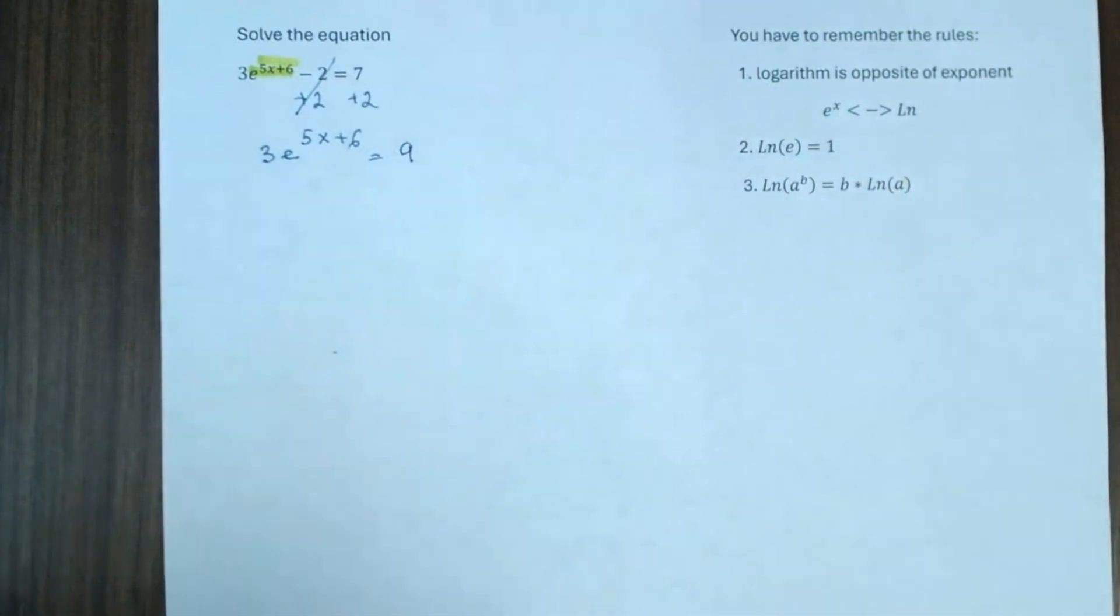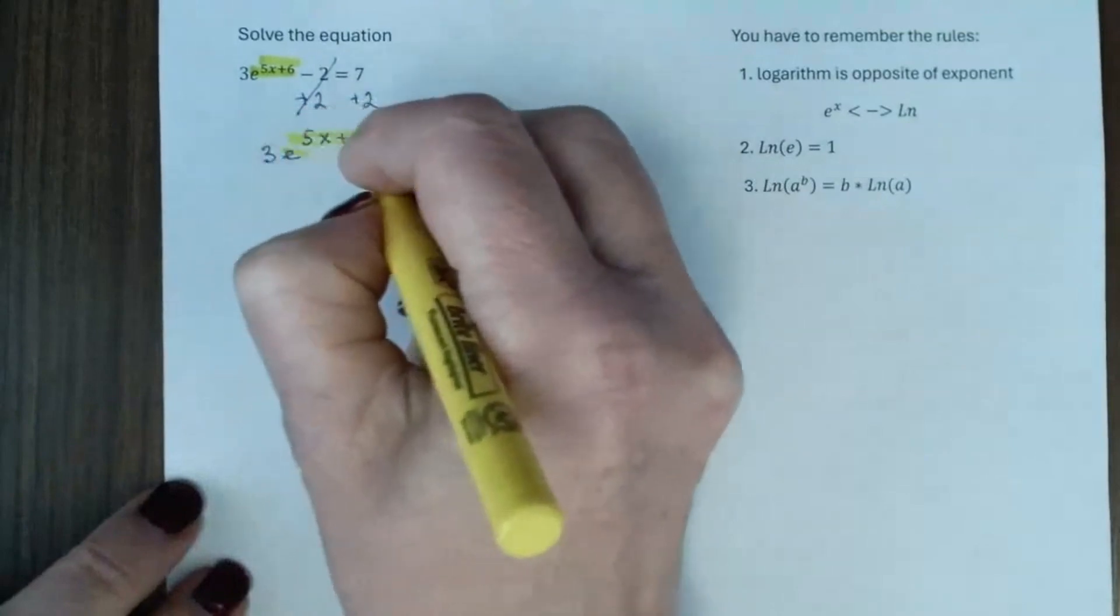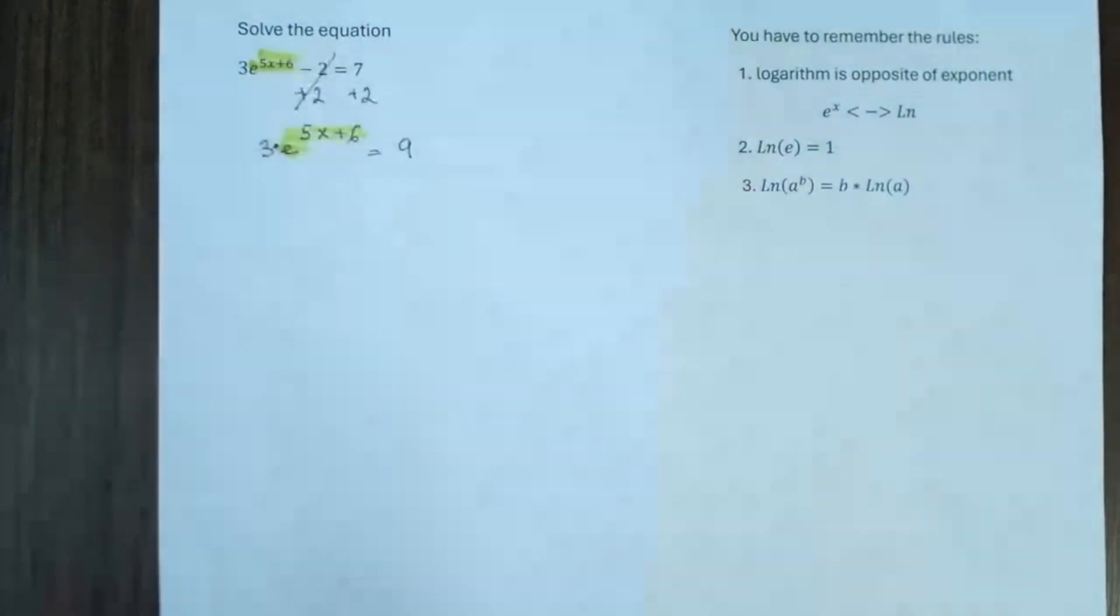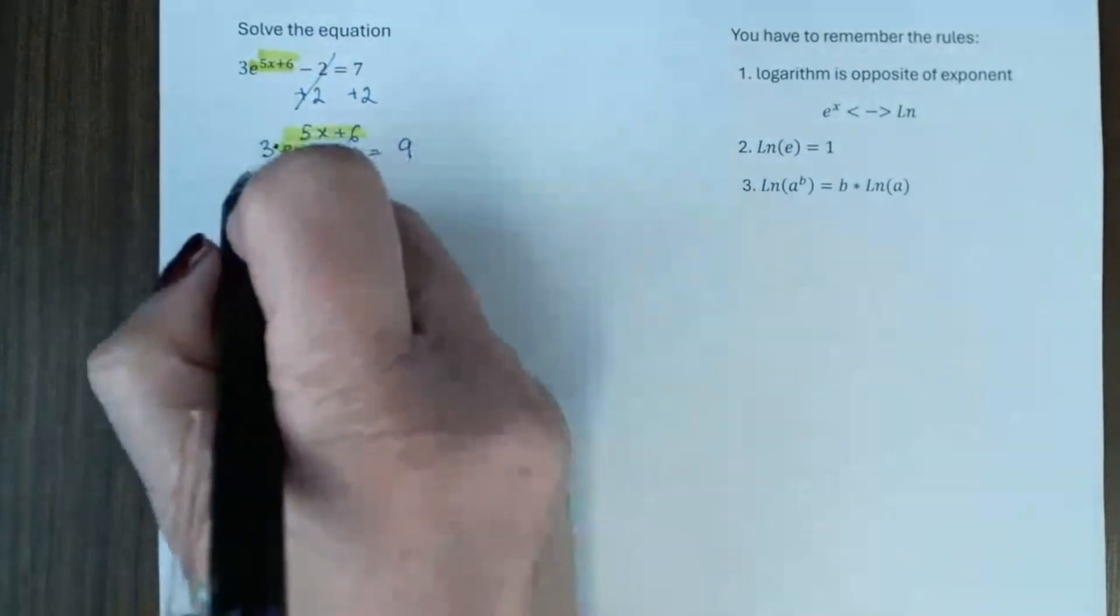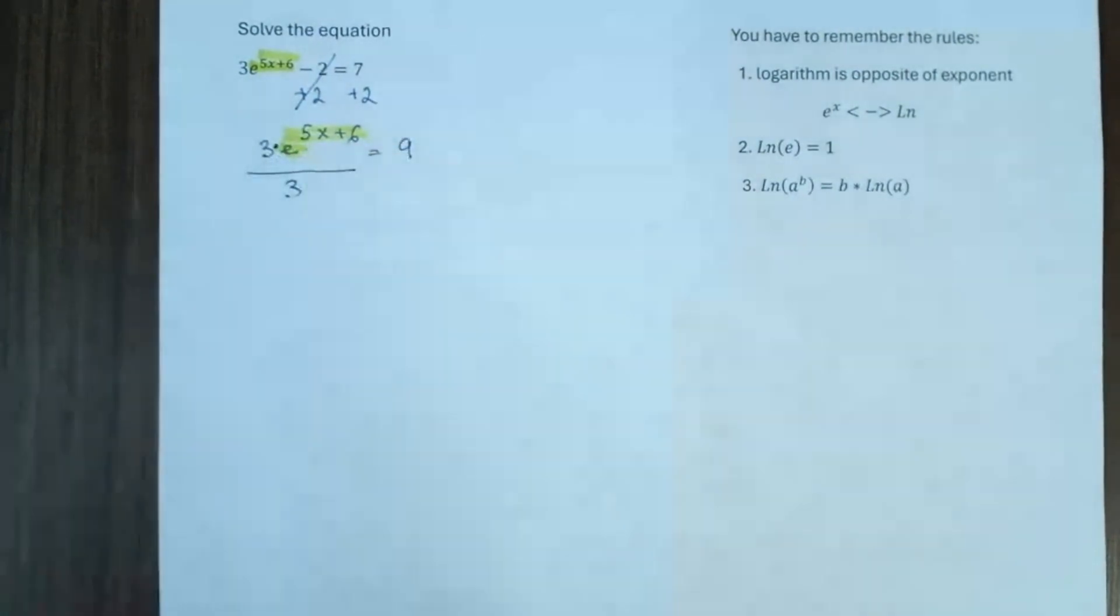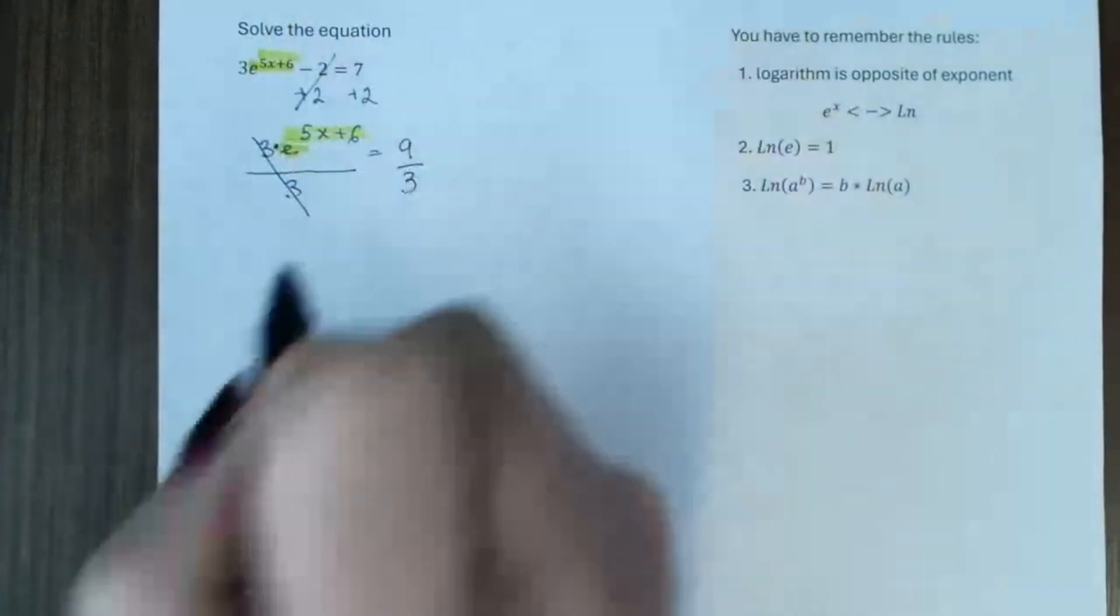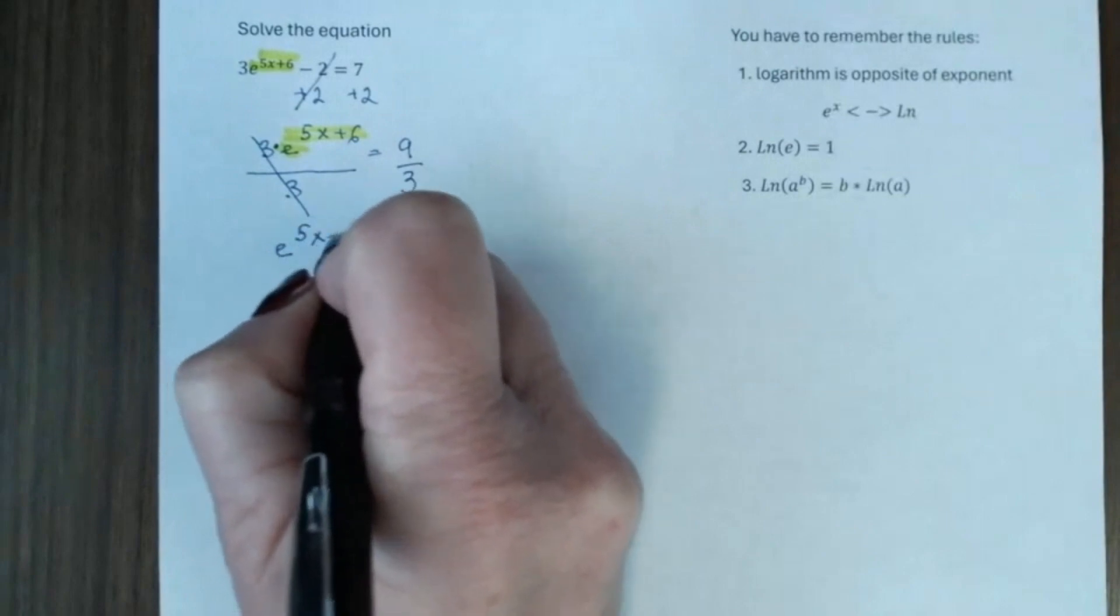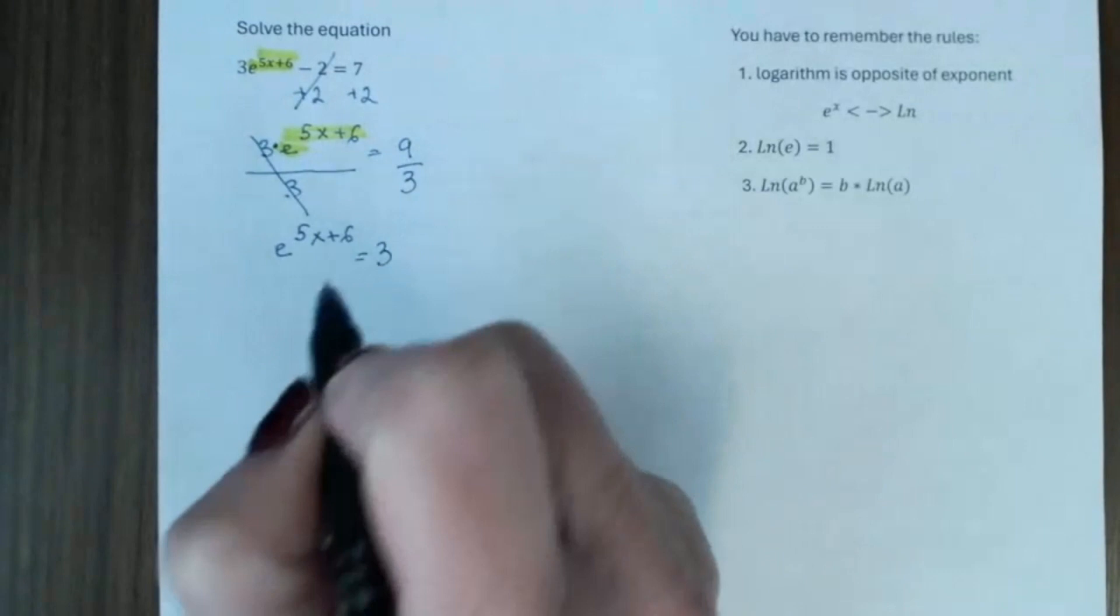And again, we want to have the base e to the power of 5x plus 6 by itself on one side. We have multiplication between 3 and e. So, to get rid of 3, we have to divide both sides by 3. On the left, we will have e to the power of 5x plus 6. 9 divided by 3 will give you 3.